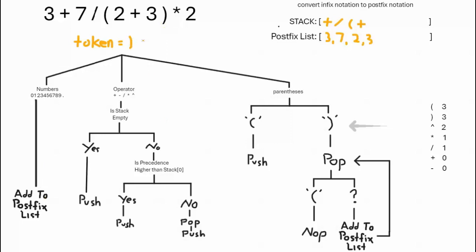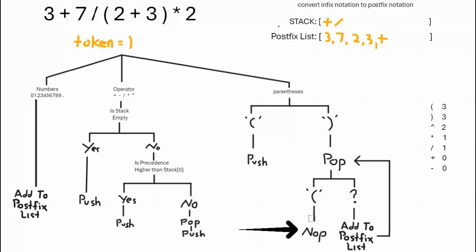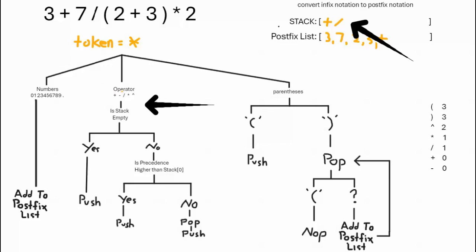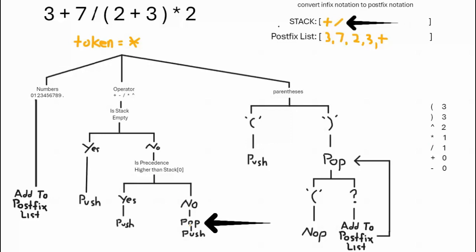The next element is three — it's a number, add it to the postfix list. We've now come to the close parenthesis. Since it's closed, we pop from the stack and add elements to the postfix list, then pop the open parenthesis — there's no operation for it. Next element is the times operator. It's an operator, the stack is not empty. Is times higher precedence than division? No, they're the same — so we pop the division off the stack and then push multiply.